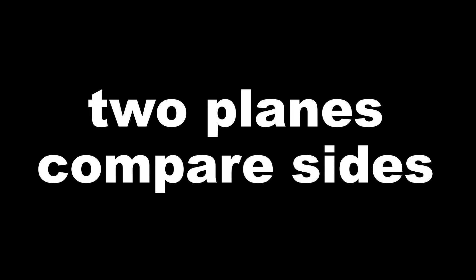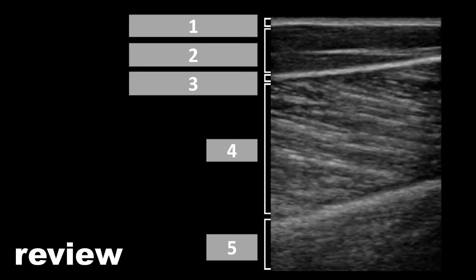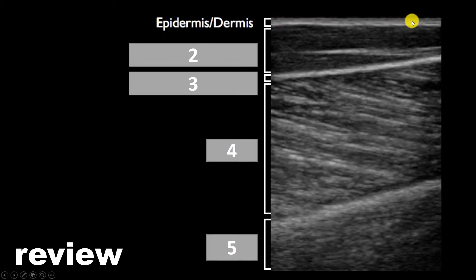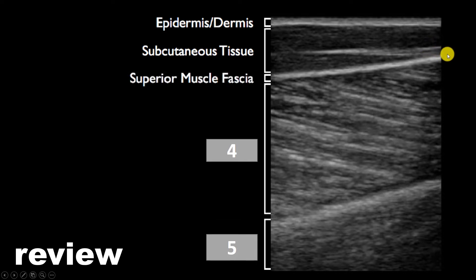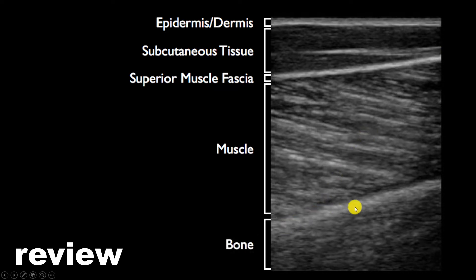You want to scan in two planes, and it's always beneficial to scan the healthy or unaffected side to compare it to the affected side. Reviewing our anatomy: the top layer is the epidermis and dermis. The next layers are the subcutaneous tissue — fat, connective tissue, blood vessels, etc. The next layer is the superior muscle fascia, followed by muscle, and then last, this hyperechoic line and anechoic shadow is bone. When doing soft tissue exams, you really want to focus on these top two to three layers.